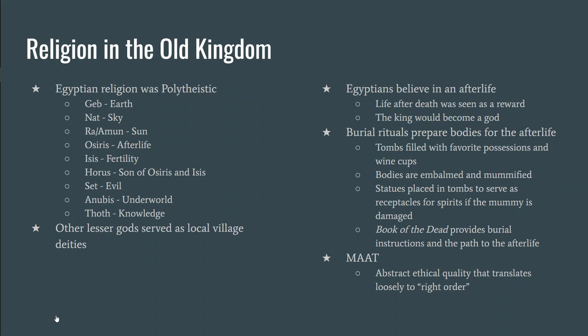Osiris used to be the god of fertility, but Horus got jealous of Osiris, murdered him, and cut his body into pieces. Osiris's wife Isis had to put him back together. Because Isis gave a second life to Osiris, she became the goddess of fertility, and Osiris became the god of the afterlife — because he was born again, a second life so to speak. There are also local gods that serve villages, so there are lesser gods as well.